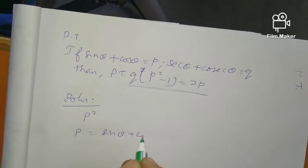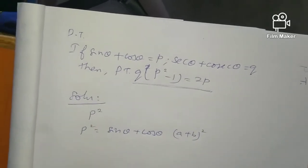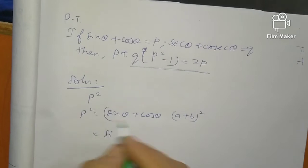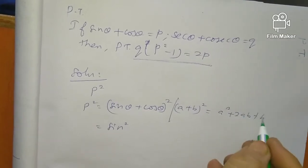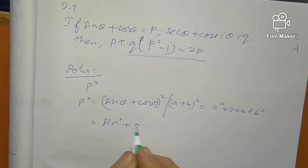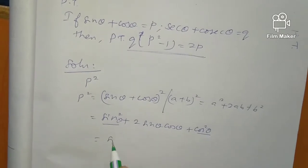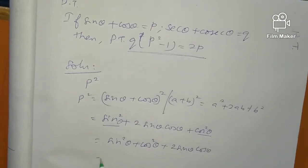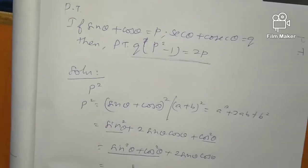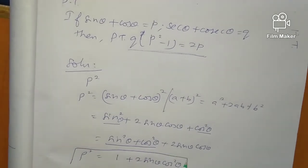P equals sin theta plus cos theta. Using the formula A plus B whole squared equals A squared plus 2AB plus B squared, P squared equals sin squared theta plus 2 sin theta cos theta plus cos squared theta. Grouping sin squared theta plus cos squared theta gives 1, so P squared equals 1 plus 2 sin theta cos theta.